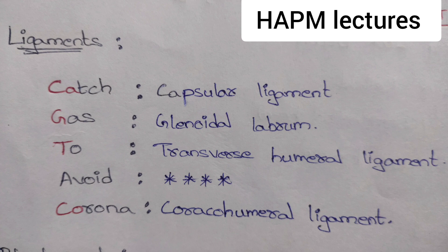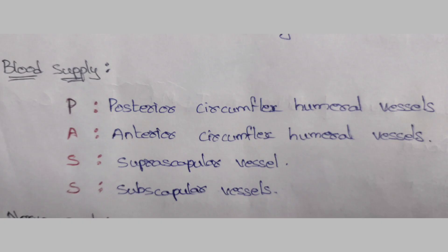The mnemonic of the ligaments is 'catch gas to avoid corona' — these are the four ligaments. Next, coming to the blood supply: the mnemonic is 'pass', because blood passes from one place to another.